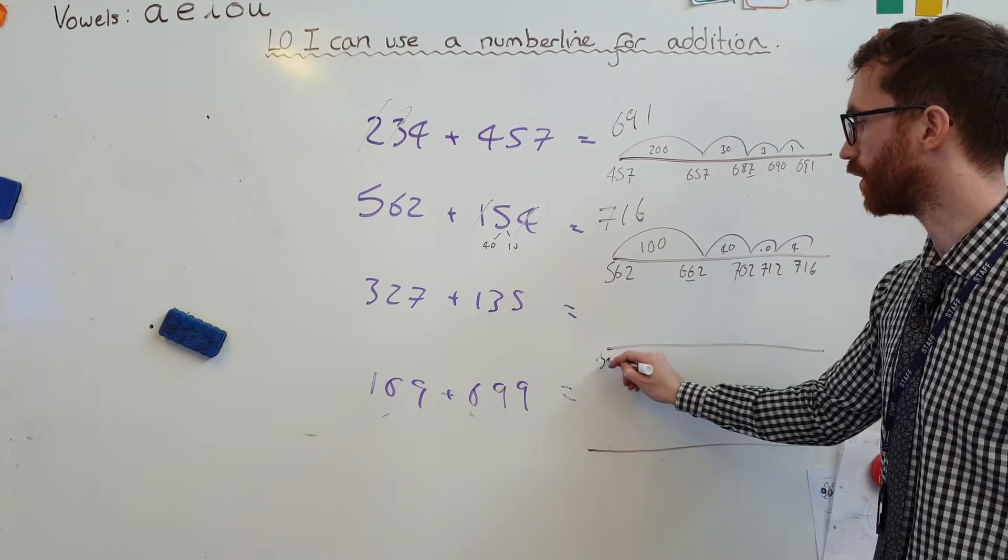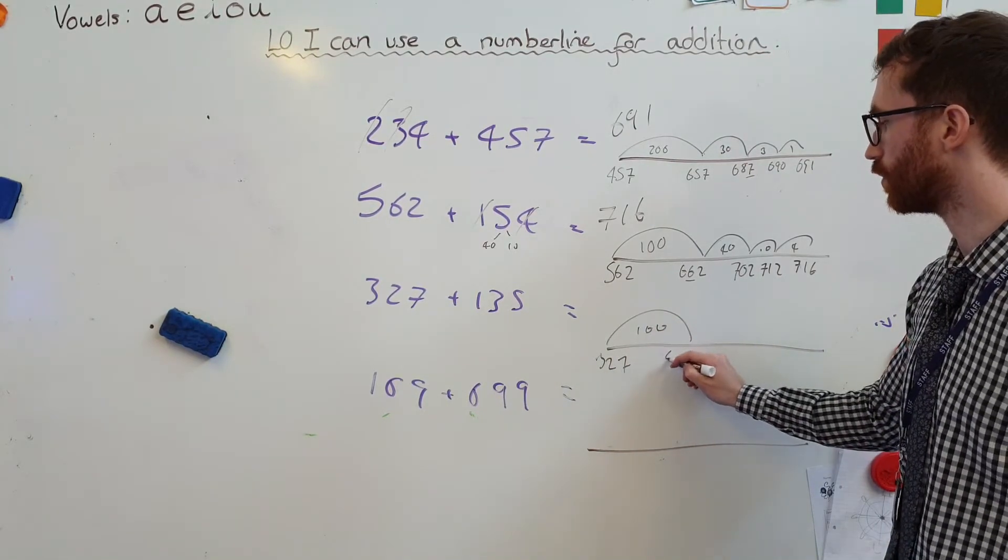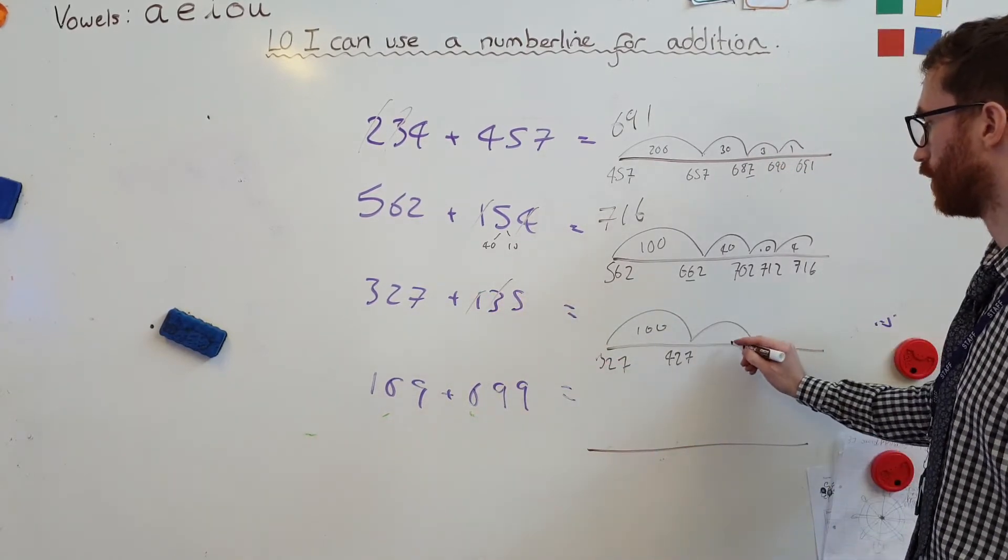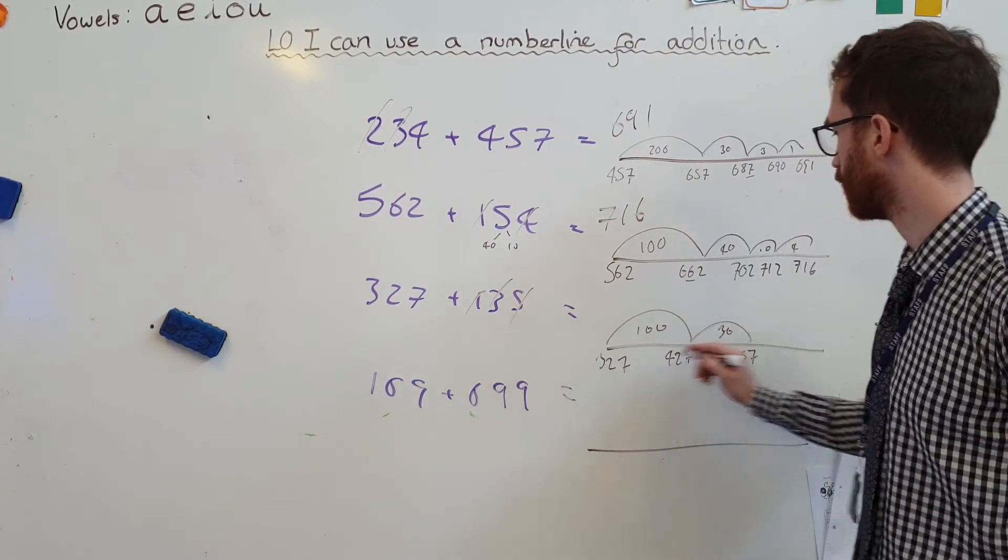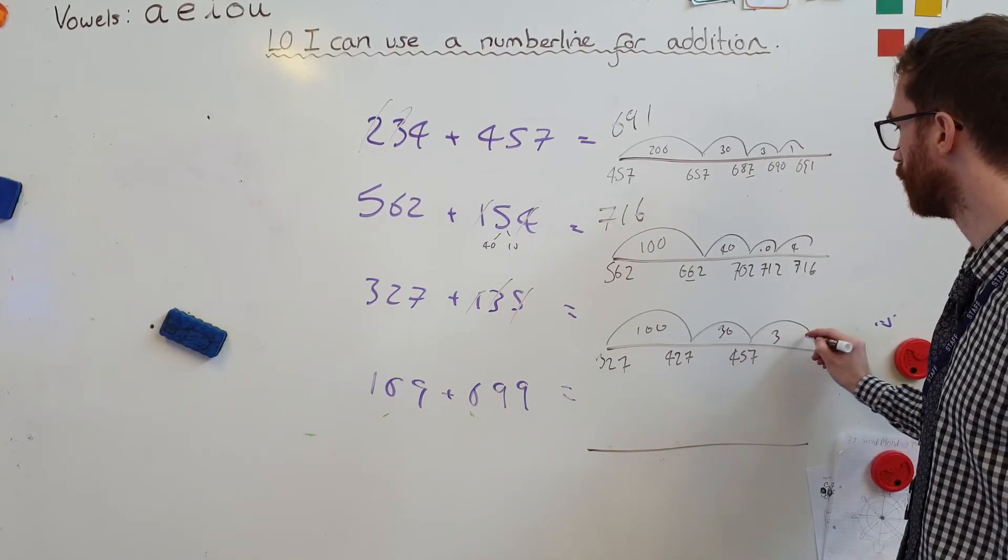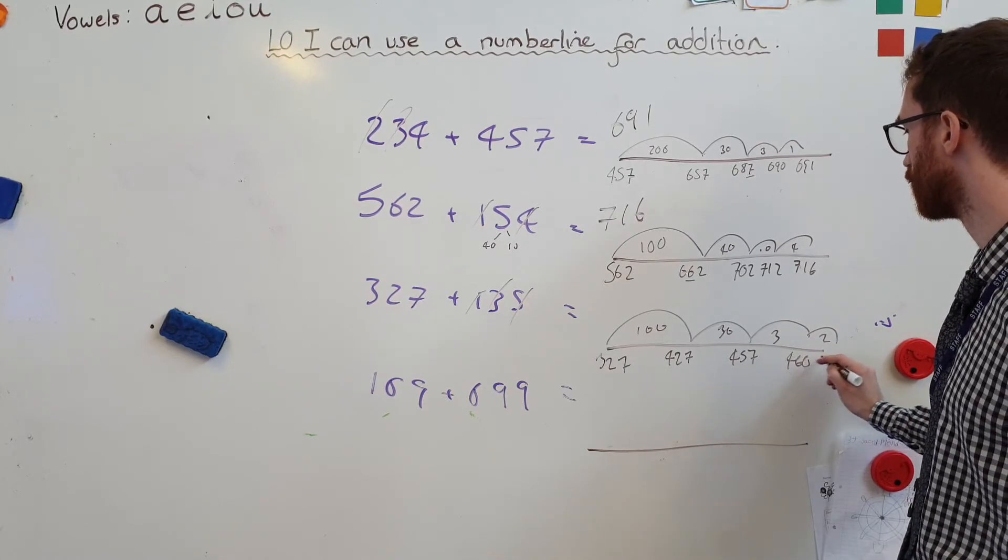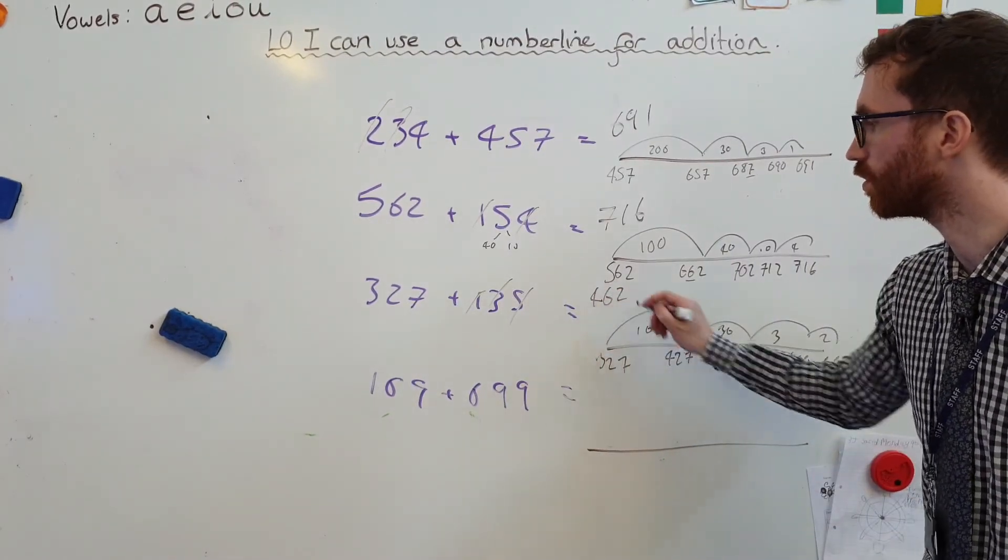327. Add 100, gets me to 427. Add 30, gets me to 457. Add the 5, I'm going to do 3 and 2 for my number bonds, so, 460, 462. Nice and simple. 462.